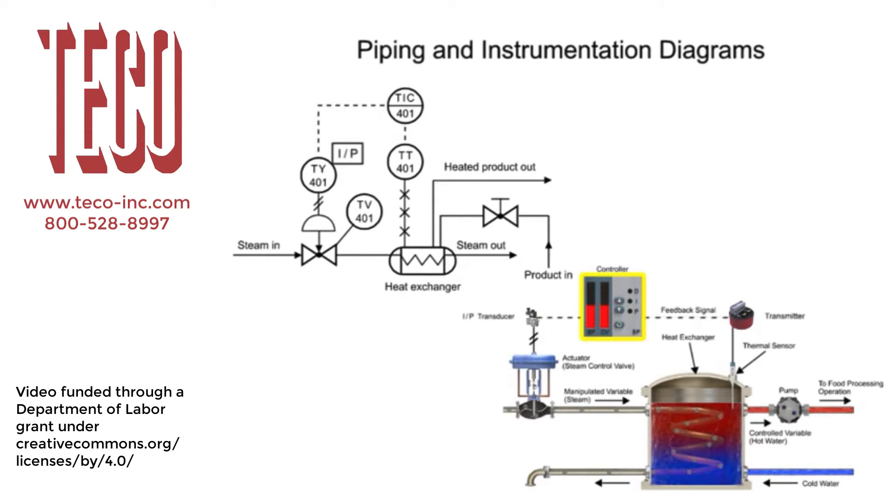The controller and indicator is the instrument where the transmitter sends an electrical signal, and is shown in the functional identifier at the second and third letters, I and C. Balloons with a solid dividing line indicate that the instrument is board mounted.